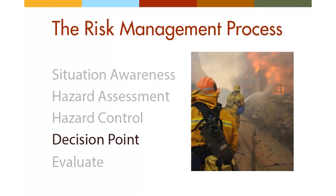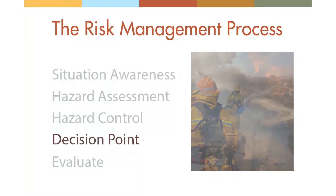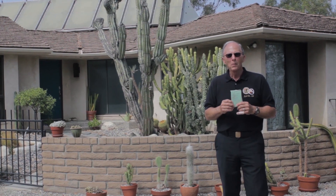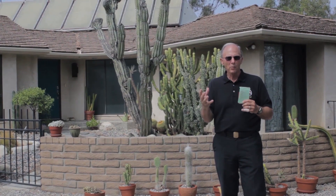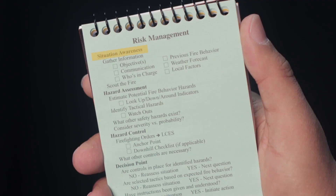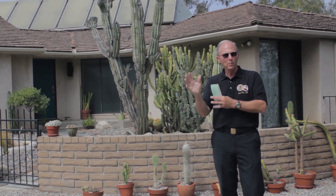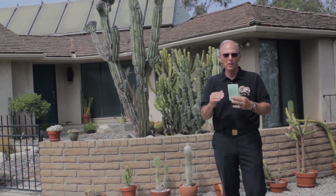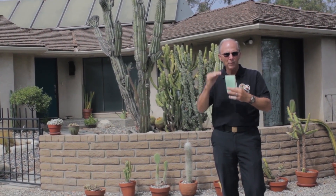Decision point is the time to implement your plans. The key is that you have worked through the other stages of the risk management process in preparation for your decisions. Let's review where we are: when we first arrived, we did our situational awareness; we walked around the structure and did our hazard assessment; we went through hazard control using the fire orders; and we applied PACE as a contingency planning mechanism in case we misjudged fire behavior. Those three steps are very important before we ever go to work — you can do them quickly with practice, but you do have to follow that process.